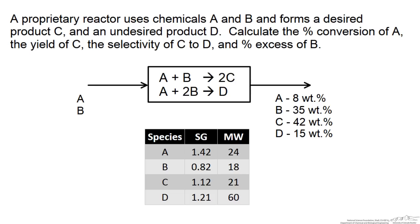In this screencast we are going to work through an example that involves two reactions: one that produces a desired product and one that produces an undesired product. We are going to look at how we would calculate the percent conversion of reactant A, the yield of C (our desired product), a selectivity of C to D, and also a percent excess of our other reactant B.